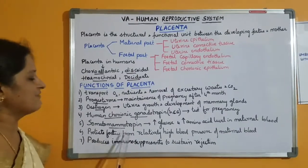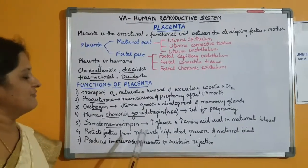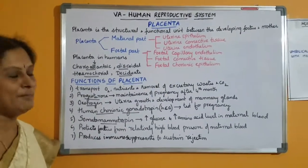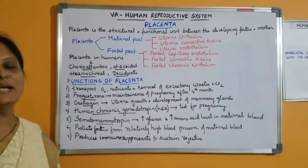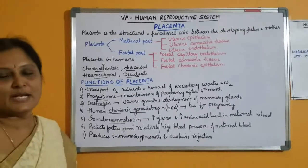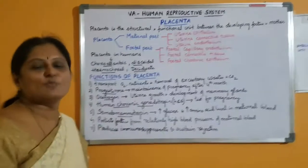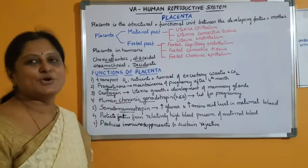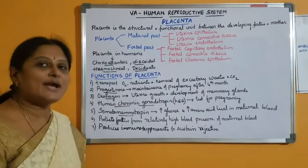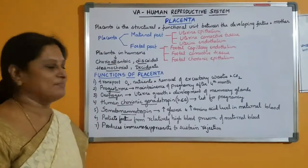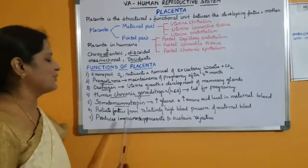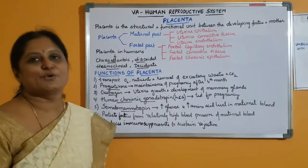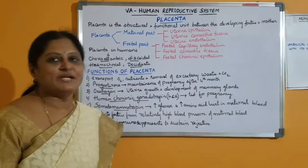The placenta protects the fetus from the relatively high blood pressure of the maternal blood. Since the fetus has both maternal and paternal chromosomes, the paternal chromosomes are foreign to the mother and she starts producing antibodies. To avoid rejection, the placenta produces immunosuppressants, thus protecting the fetus.